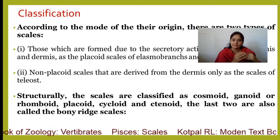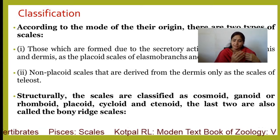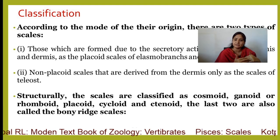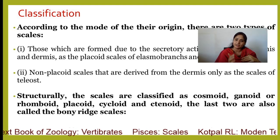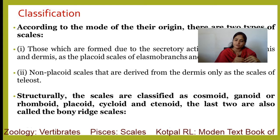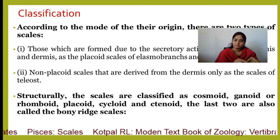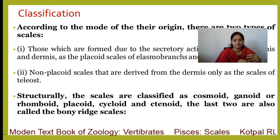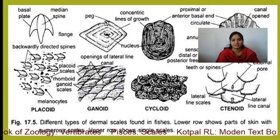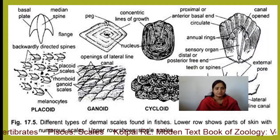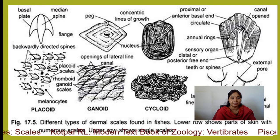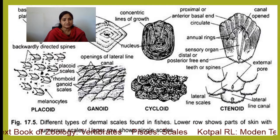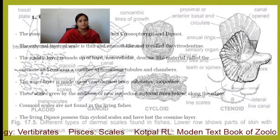Structurally, scales are classified as cosmoid, ganoid, rhomboid, placoid, cycloid, and ctenoid. The last two are also called bony ridge scales. I have made individual videos on placoid scales in detail — placoid scale modification and significance are covered in a different video. The remaining types — cosmoid, ganoid, cycloid, and ctenoid scales — are present in this video.